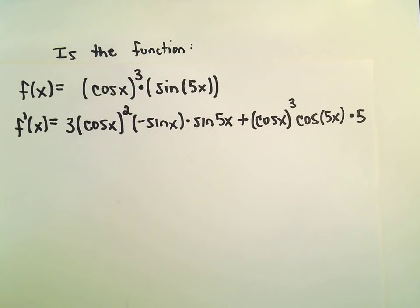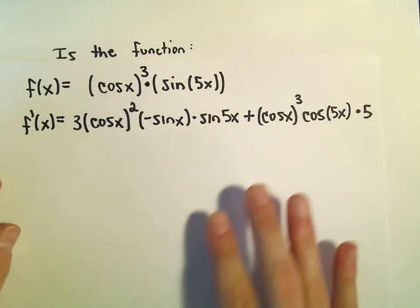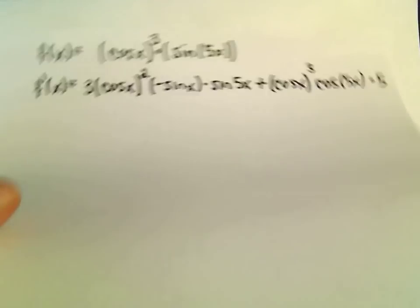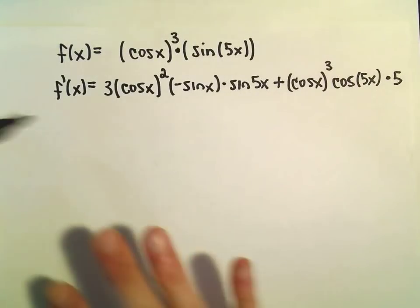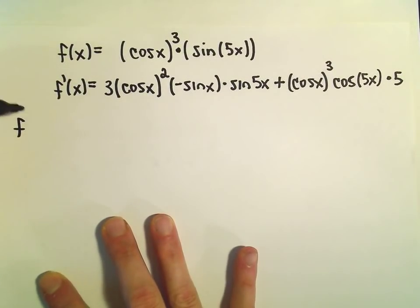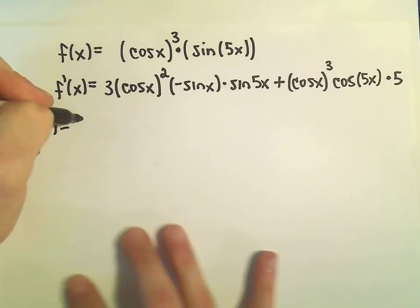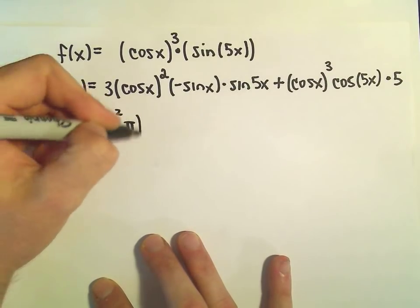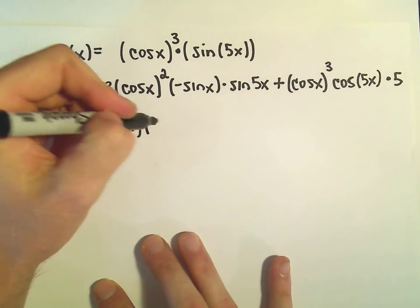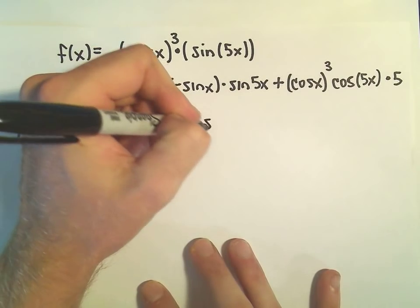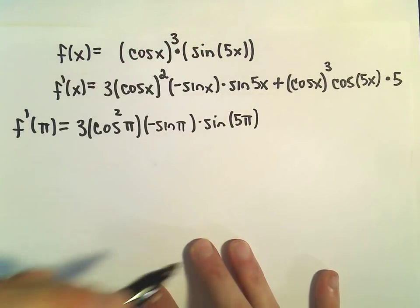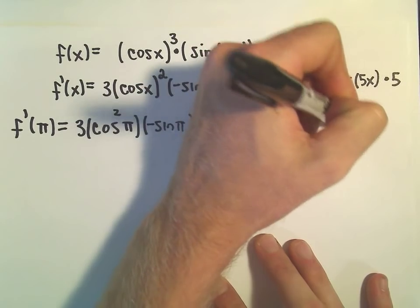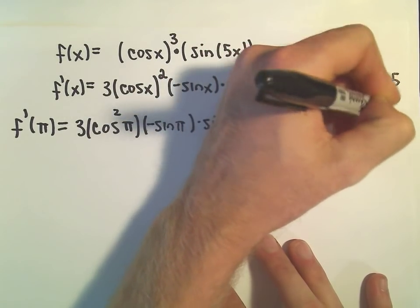So we could start simplifying all this down. There's really not a tremendous amount of simplification to do, honestly. But what I'm going to do now is just plug in our point. So we wanted to know what was happening at pi. We would get f prime of pi. So we would get 3 times cosine squared of pi, so I'm just kind of pulling the exponent back in, times negative sine of pi, times sine of 5 pi. And then we would get plus cosine of pi cubed times cosine of 5 pi times 5.